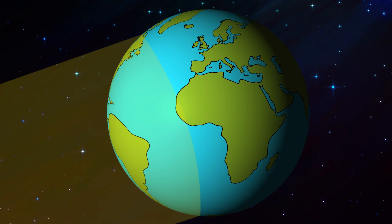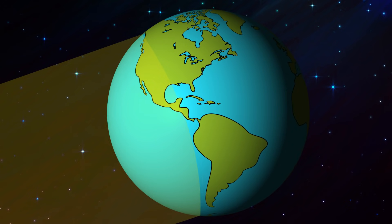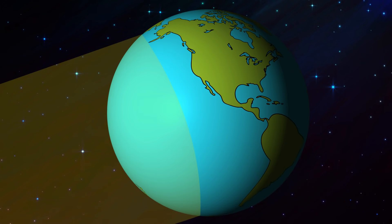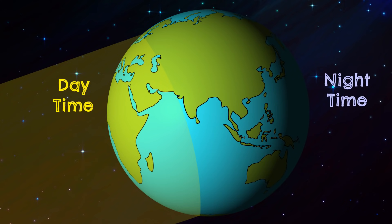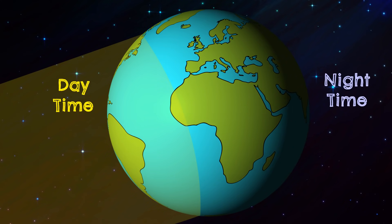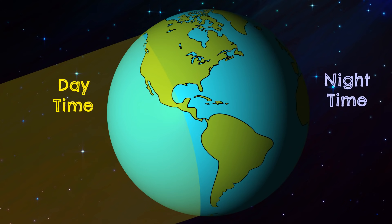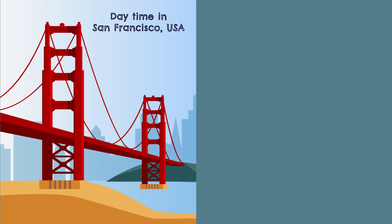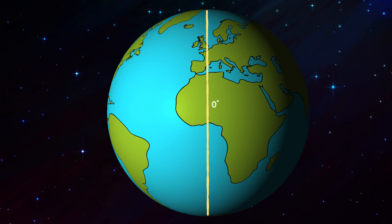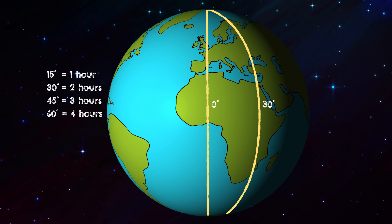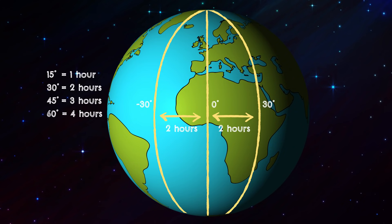Lines of longitude mark time zones. As the earth rotates on its axis, only one half of the earth faces the sun at any given time. So when it's nighttime in one hemisphere, it's daytime in the other hemisphere, and this means that people in different parts of the world live in different time zones. To tell the time difference between two parts of the world, you just have to count the number of longitude degrees between them. Every 15 degrees is a one-hour time difference.